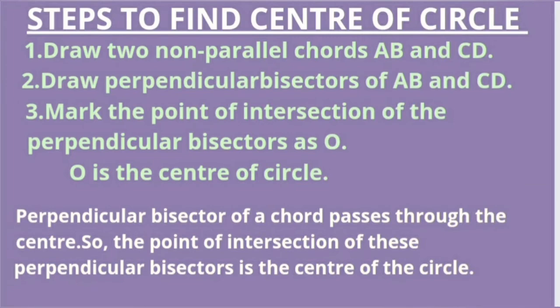When the question says draw a circle with a bangle, it means the very first step is that we are supposed to find the center of the circle. For finding the center of the circle, we will be drawing two non-parallel chords AB and CD, and then the perpendicular bisectors of these chords. The point of intersection of these perpendicular bisectors will be the center of the circle, because the perpendicular bisector of a chord passes through the center.